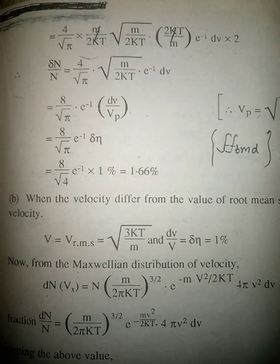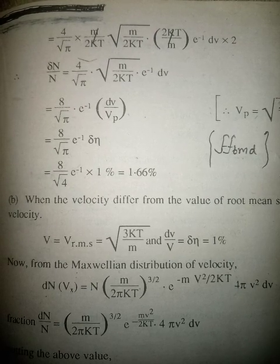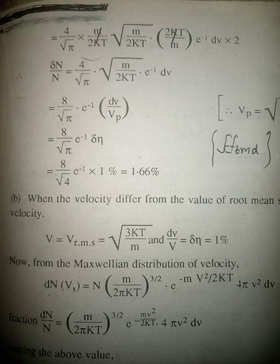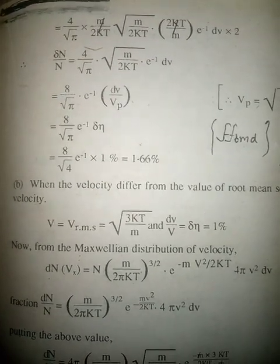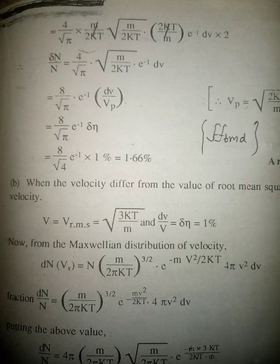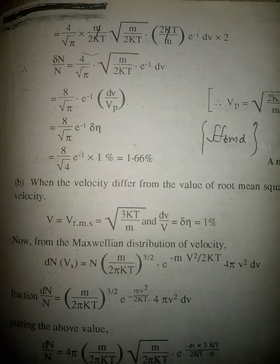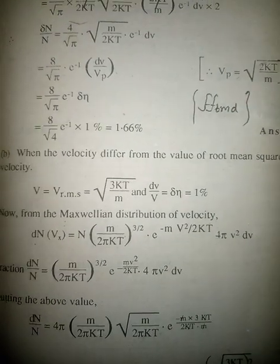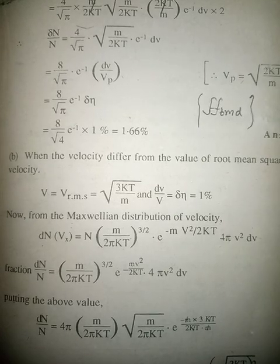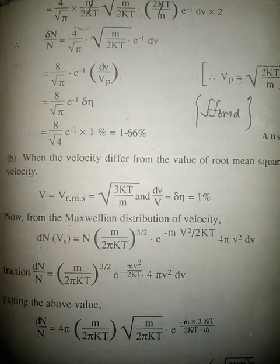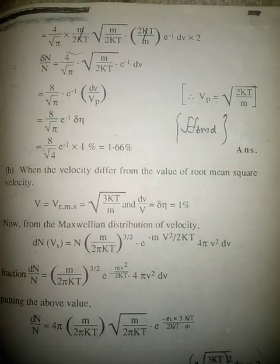ΔN/N = (4/√π) × √(m/2kT) × e^(−1) dv = (8/√π) × e^(−1) × dv/vp = (8/√π) × e^(−1) × Δη = (8/√π) × e^(−1) × 1 percent ≈ 1.66 percent.